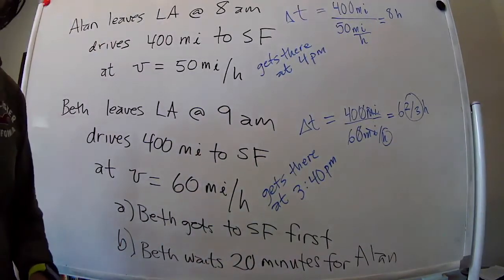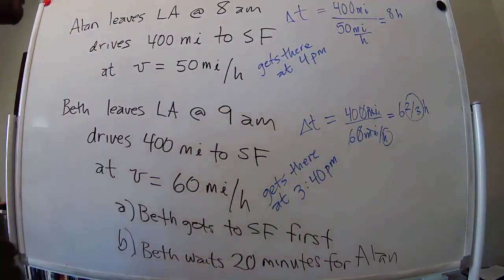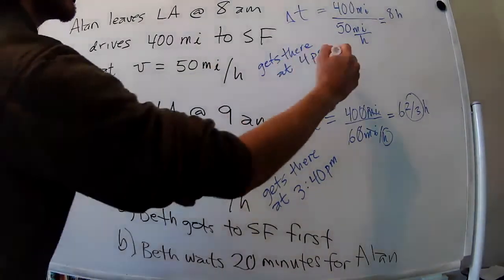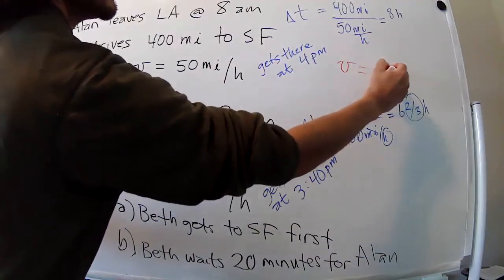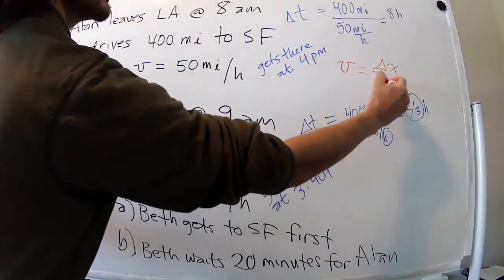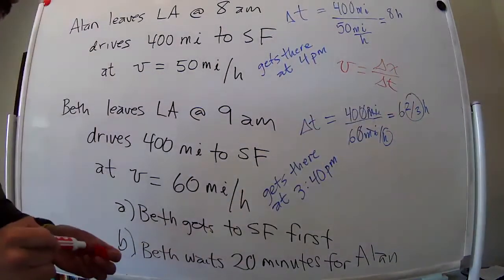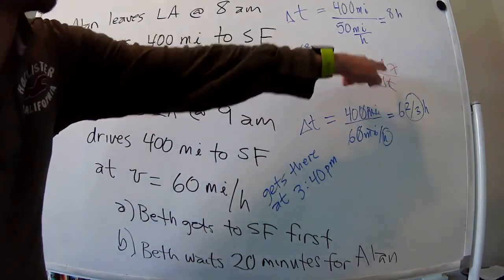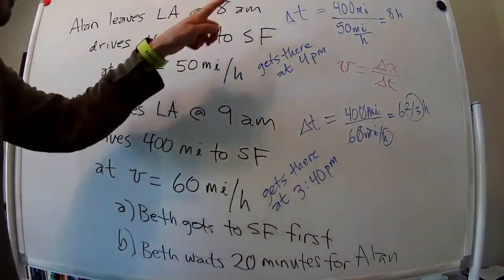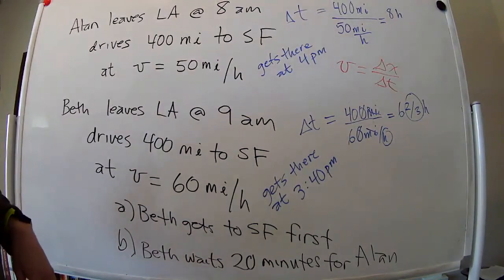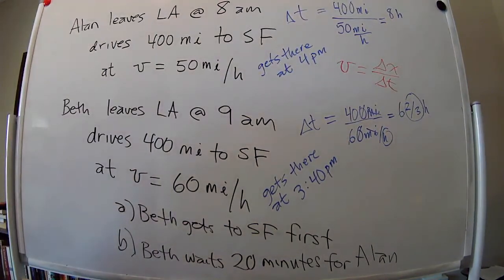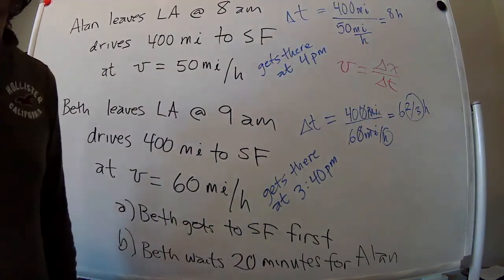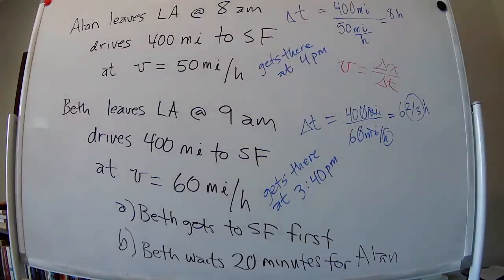And that's it. So pretty straightforward application of just the definition of the velocity, right? Velocity equals change in displacement divided by change in time. We were given velocity and distance, so we just solved for the time. And that's all we had to do. All right, hope you liked the problem.